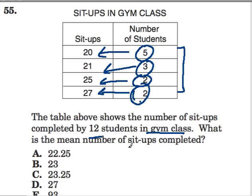What is the mean number of sit-ups completed? The mean - we add up all of our values and divide them by that number of values. So there's 12 values here. We're going to add up all this stuff and then divide by 12.